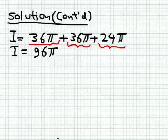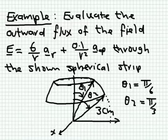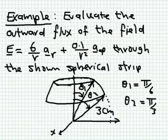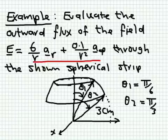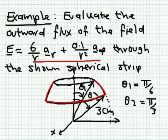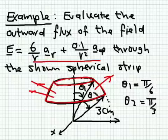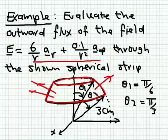One more example, this time in spherical coordinates. We want to calculate the flux of the field E equals 6/r a_r plus 0.1/r² a_phi in spherical coordinates through a spherical strip. This strip is part of the surface of a sphere. The strip spans from theta_1 equal to pi over 6 (30 degrees) to theta_2 equal to pi over 3 (60 degrees), and the radius of the sphere is equal to 3 centimeters.